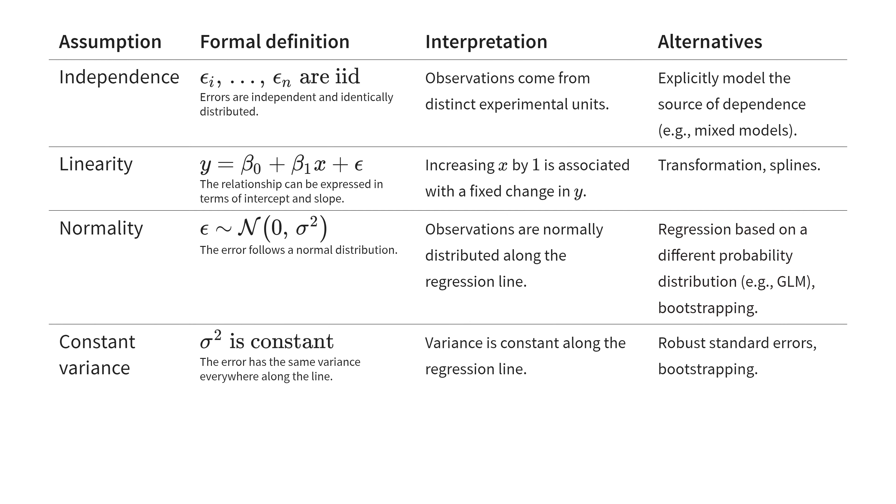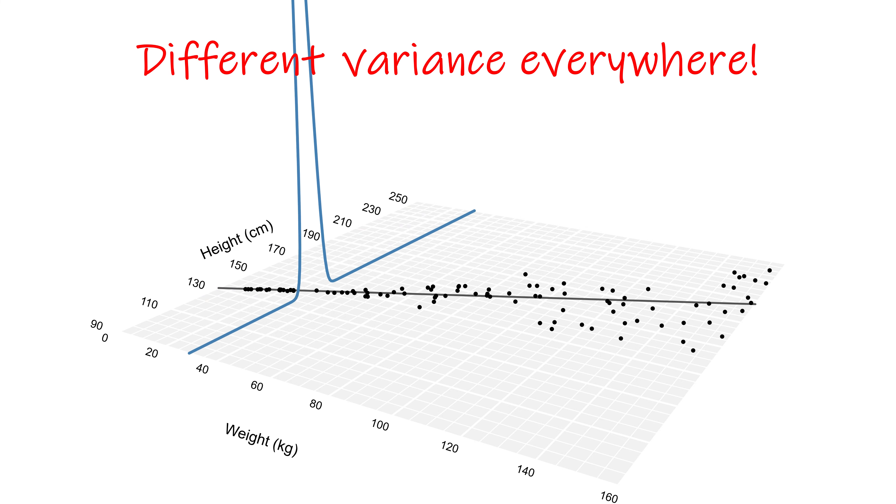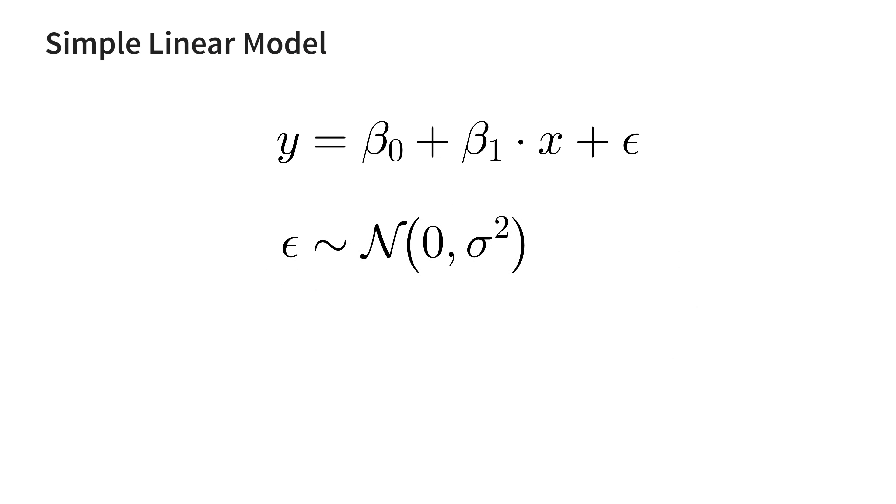If the error can be reasonably approximated as normal, then constant variance means that the variance of this normal distribution does not change as we travel along the regression line. If this assumption does not hold, then the spread is actually different depending on where you are, something which is not captured by our model.